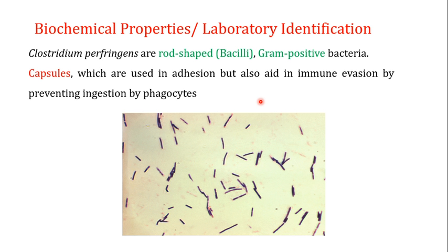Regarding biochemical properties and laboratory identification: Clostridium perfringens are rod-shaped, Gram-positive bacteria — they appear purple in Gram staining. They have a capsule outside their cells, which is important for adhesion to host cells and aids in immune evasion by preventing ingestion by phagocytes.